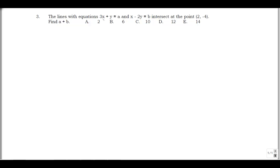So we know our point (2, -4) is on these lines. That means if we plug in 2 for x and -4 for y, we should get a true statement. So what we'll get here, we get 3 times 2 plus negative 4, that should be a.